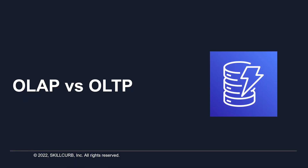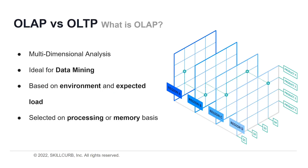OLAP vs OLTP. Online Analytical Processing, or OLAP, is a system for performing multidimensional analysis at high speeds on large volumes of data. Typically this data is from a data warehouse, data mart, or some other centralized data store. OLAP is ideal for data mining, business intelligence, and complex analytical calculations, as well as business reporting functions like financial analysis, budgeting, and sales forecasting.